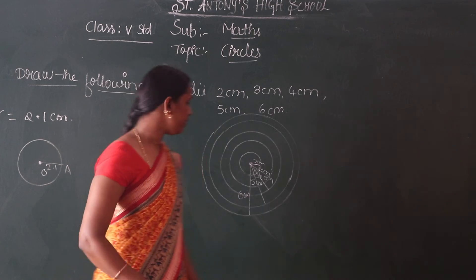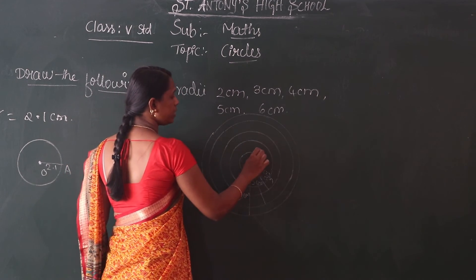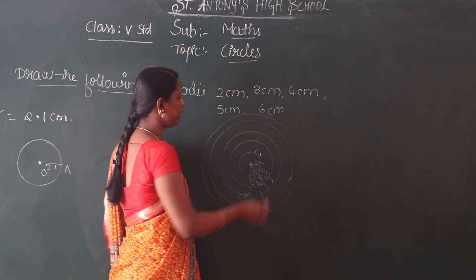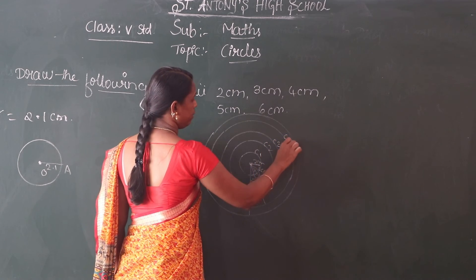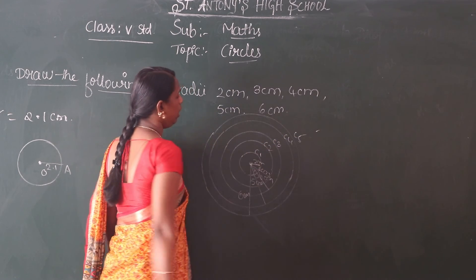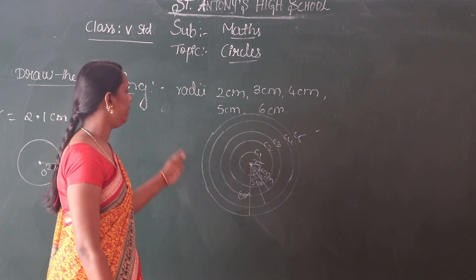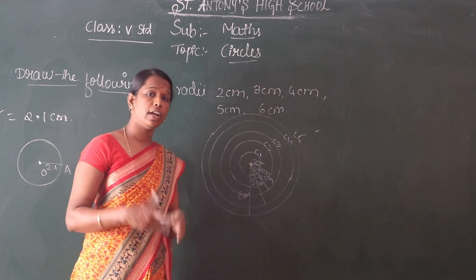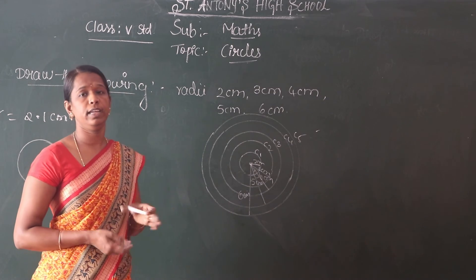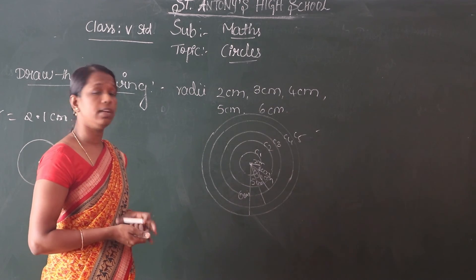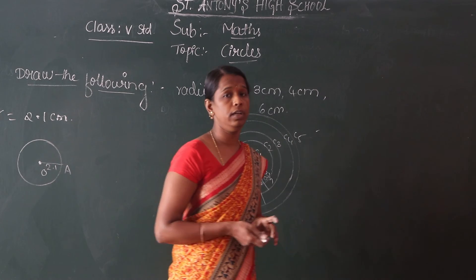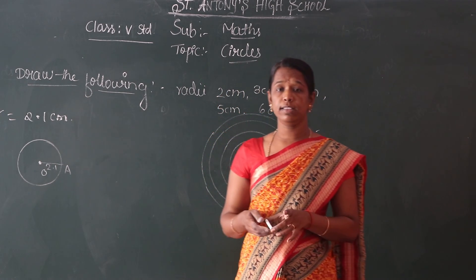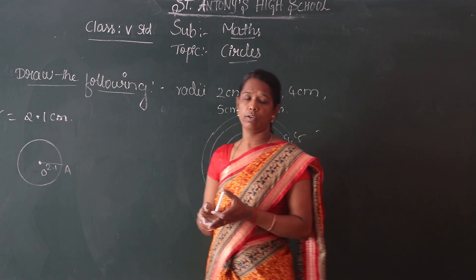So here which is the first circle? This 2 cm circle is the first circle C1, and then C2, C3, C4, C5. Okay children, write all the radii 2, 3, 4, 5, 6 cm. Try to write more radii. The classes I will send you through WhatsApp. Practice the circles using the thick sheets.